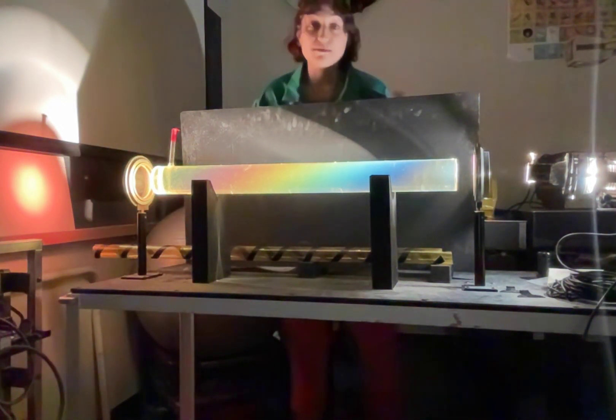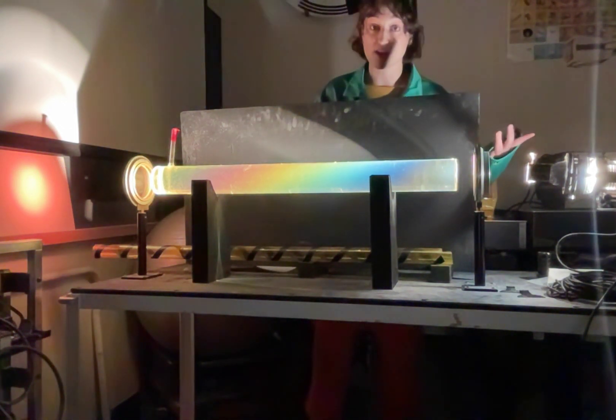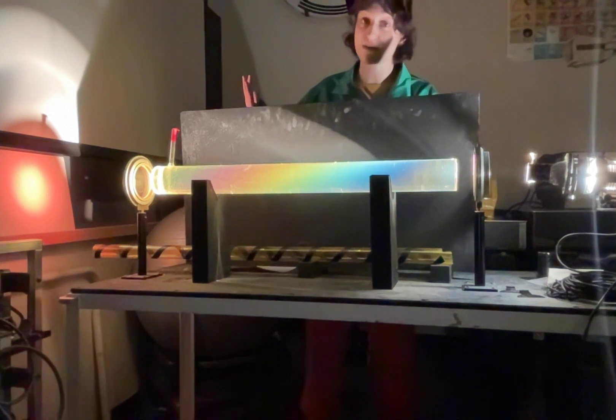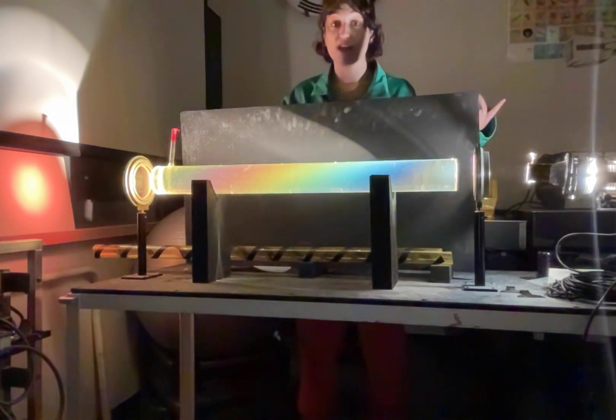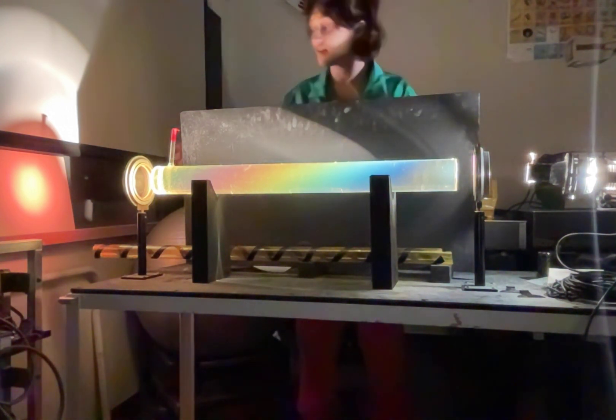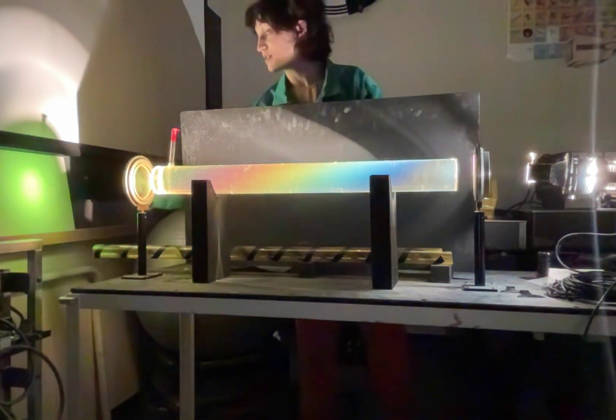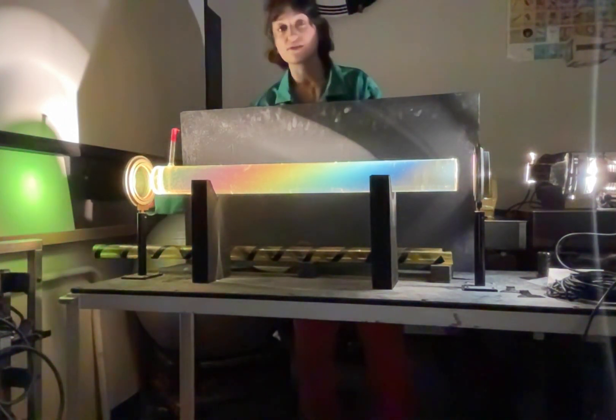The polarizer only admits certain angles of polarization, which are in line with the angle of the polarizer. And since the polarization angle is related to the wavelength, that means only certain colors are allowed to come through. Pretty interesting.